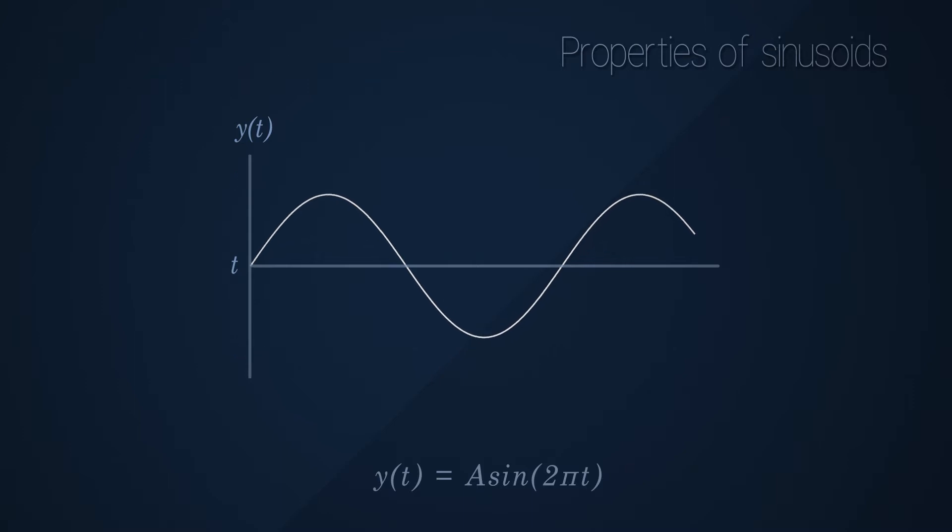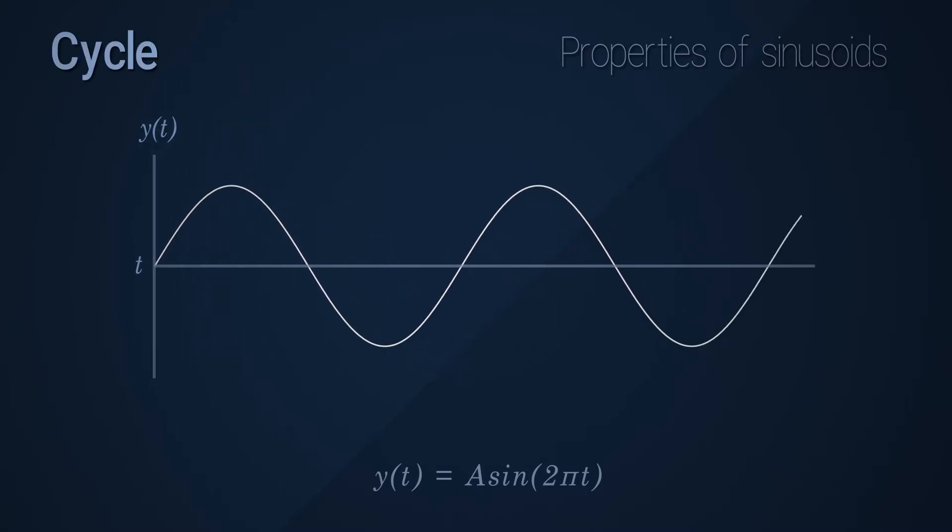The next property we can talk about is the cycle. A cycle is a section of the waveform, stretching from when the signal starts to when it reaches back to its initial value.